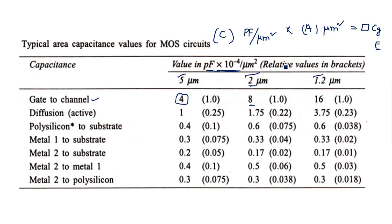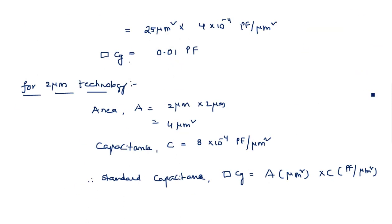One more thing — in brackets we are giving relative values. Relative values are used when you go to a particular layer or material like polysilicon or any type of metal layer. For gate-to-channel it is 1 for 5 micrometer technology, and for diffusion it is 0.25. In the next video I will explain how to calculate the relative capacitance using one example.